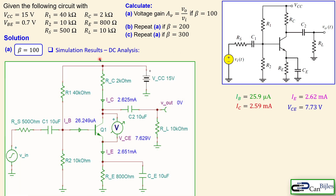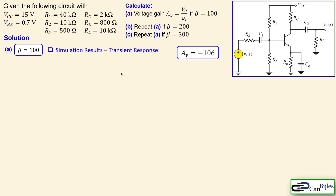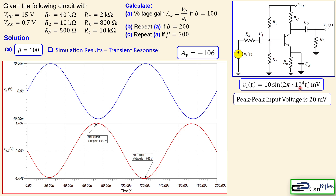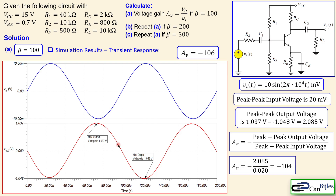Looking at the simulation results for DC analysis with beta equal to 100, the values are very close to our calculations — small errors are due to more detailed BJT parameters in the simulator. In the transient response, the blue trace is the input and red is the output. The output is inverted, confirming the minus sign. The input is 10 mV peak at 10 kHz. The output peak-to-peak is 2.085 V, giving a simulated gain of minus 104, very close to the calculated minus 106.